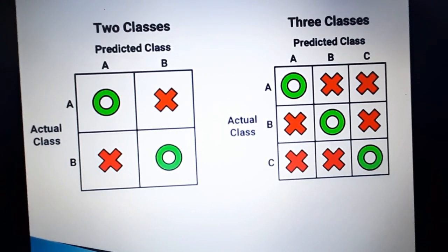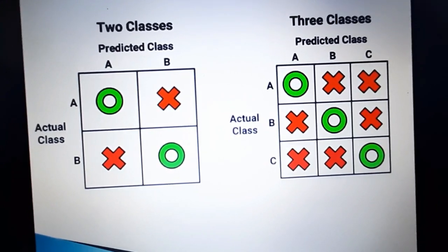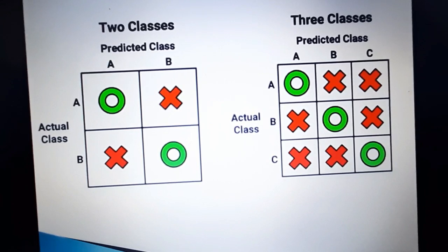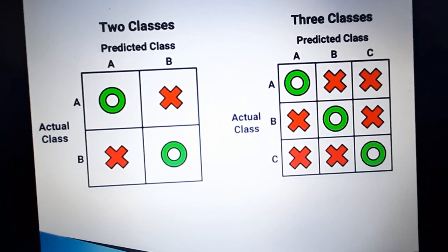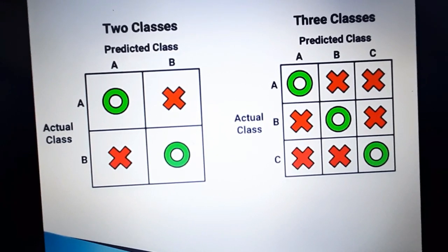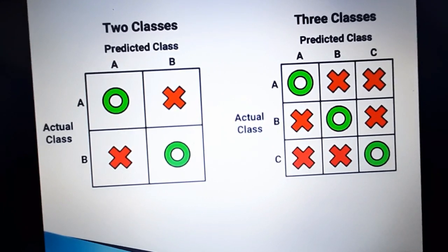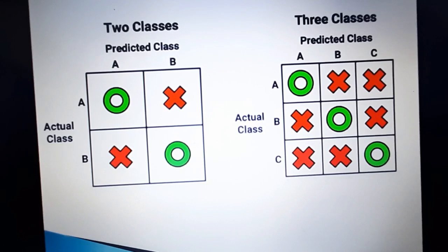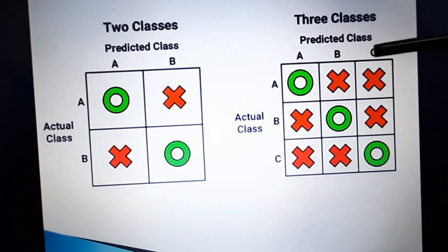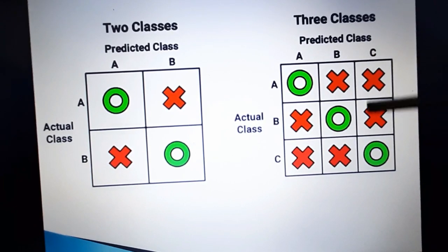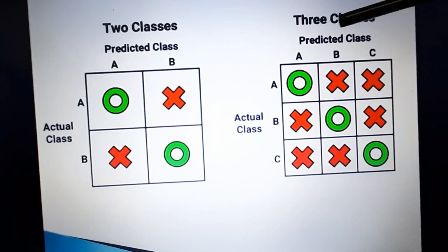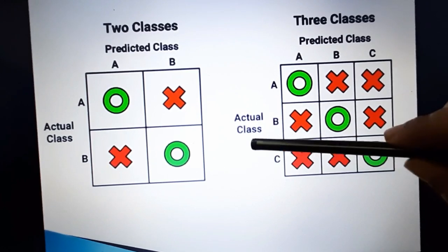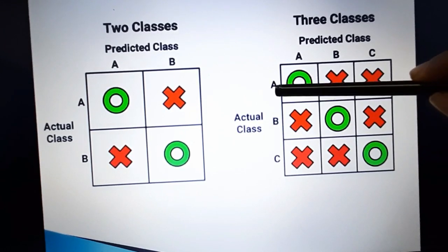In this slide, there are two types of confusion matrices: one is a 2-by-2 confusion matrix and the other is a 3-by-3 confusion matrix. One dimension — either row or column — represents the predicted class, and the other represents the actual class. In this example, the predicted class is A, B, and C, and the row represents the actual class A, B, and C.